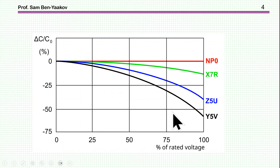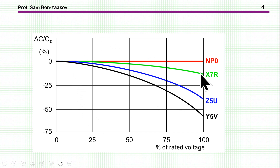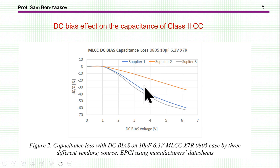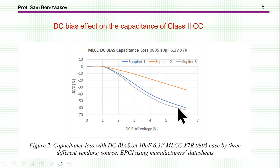Here is a description of what happens with different materials. For the Class I NPO, there is really no DC bias effect. For X7R and other Class II materials, there is an effect. This is a generic plot — not necessarily one particular capacitor. X7R has some drop with DC bias, and others have a much larger drop. What is really surprising is that for the same package size, capacitance, maximum voltage, and specified material — X7R — different manufacturers produce capacitors of different behavior. The materials are apparently not the same.